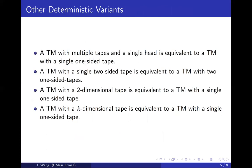Other deterministic variants include a DTM with multiple tapes and a single shared head, which is obviously equivalent to a Turing machine with a single one-sided tape. A DTM with a single two-sided tape is equivalent to a Turing machine with two one-sided tapes: you select a midpoint, and tape 1 goes in one direction while tape 2 goes in the other.